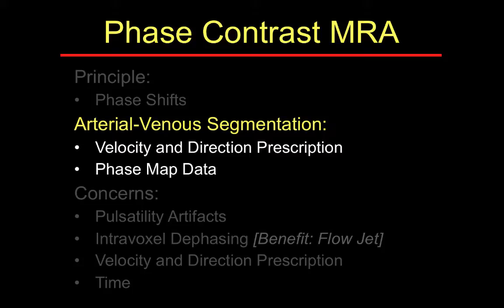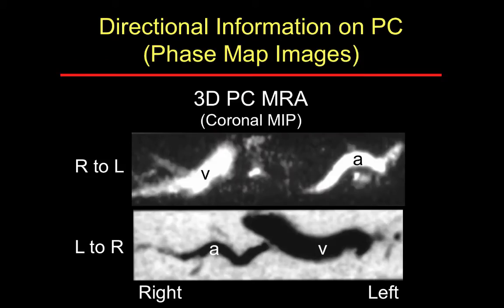Low velocity encoding is for venous flow; high velocity encoding is for arterial flow. The direction can be in any of the cardinal planes, through the slice, or within an imaging volume. You can achieve differentiation of directional flow by looking at the phase map images. This is an axially acquired 3D phase contrast MRA shown as coronal projections divided into bright and dark maximum intensity projections. The bright pixels were isolated for right-to-left flow, showing the right renal vein and left renal artery, while the minimum intensity projection shows left renal vein and right renal artery.